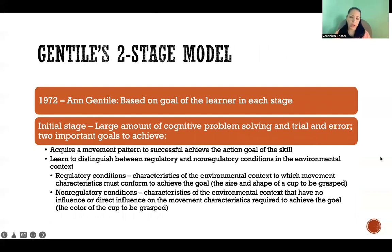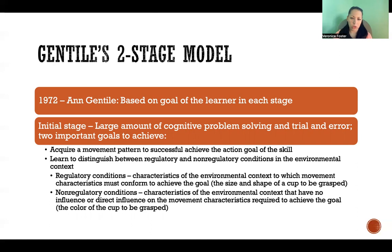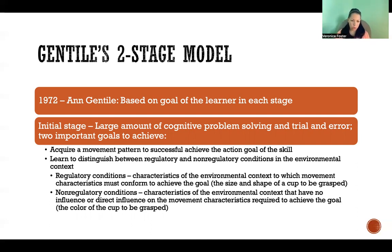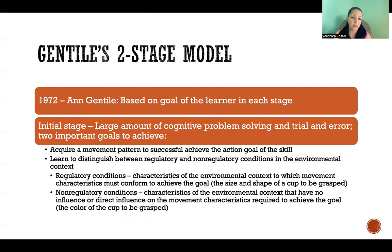Gentile's two-stage model of learning is based on the goal of the learner in each stage. The first stage is the initial stage, where there's a large amount of cognitive problem solving and trial and error to figure out how to do the movement. The learner is trying to achieve two important goals: first, to acquire a movement pattern that will successfully achieve the action goal of the skill; and second, to learn to distinguish between regulatory and non-regulatory conditions in the environmental context.